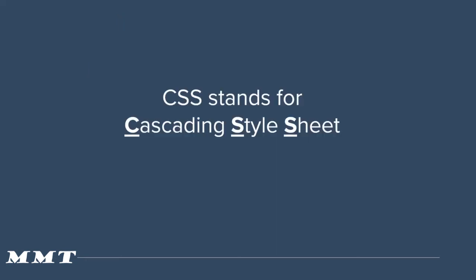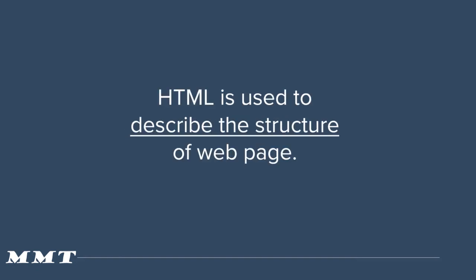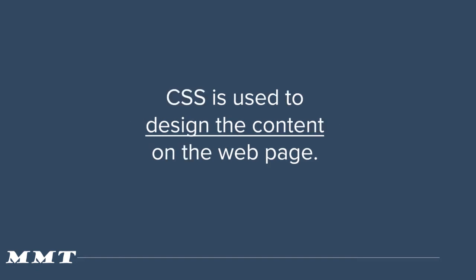CSS stands for Cascading Style Sheet. Style means adding colors, increasing the font of the text — basically giving a look and feel to your website. So let's look at the purpose of CSS. We know HTML is used to describe the structure of the web page. CSS is used to design the content on the web page. HTML does the job of structuring all the elements together; it doesn't do the designing part — the designing part is done by CSS.